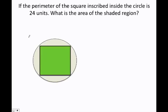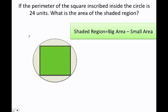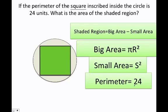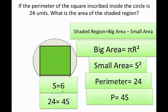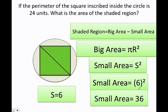If the perimeter of the square inscribed inside the circle is 24 units, what is the area of the shaded region? The shaded region is always the big area minus the small area. The circle is the big shape and the square is the small one. Since P = 4s and 24 = 4s, the side length s = 6. The small area is 6 times 6, which equals 36.